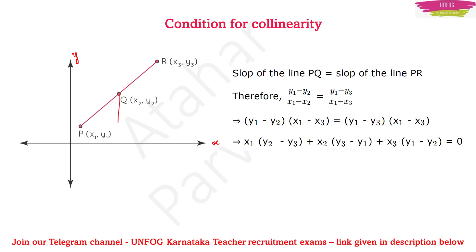So if you take the slope of PQ, it will be: the rise is y2 minus y1 and the run is x2 minus x1, giving slope equal to (y2 − y1) / (x2 − x1).